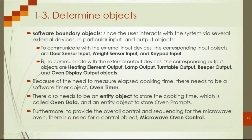We can consider the boundary objects as input devices and output devices. In this system, the input devices are: the door sensor input, the weight sensor input, and the keyboard input to enter the cooking times. The first step is to determine the internal input device objects.